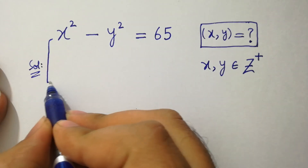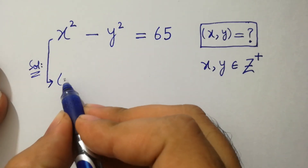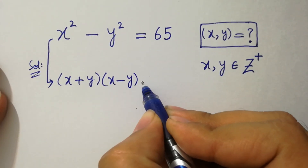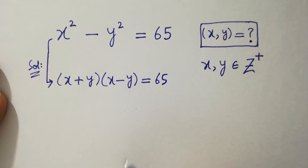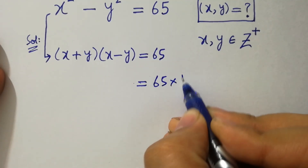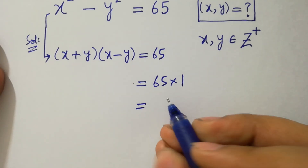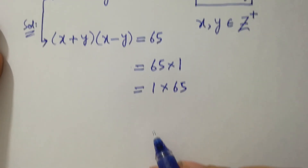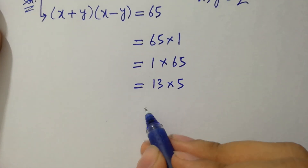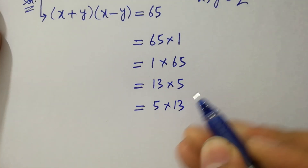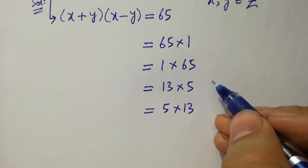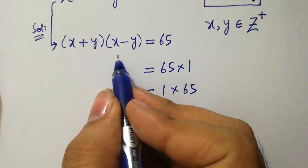This problem is the same as (x plus y)(x minus y) equal to 65. We have choices here: 65 times 1, or 1 times 65, or 13 times 5, or 5 times 13. So we have 4 choices by comparison of x plus y and x minus y.